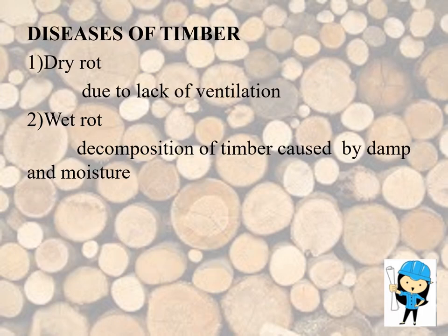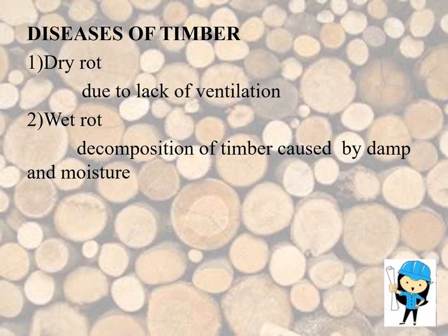Next we are going to see about the diseases of timber. There are two types: dry rot and wet rot. Dry rot is a disease caused due to lack of ventilation. This situation promotes fungal growth, which eats the fibers of the timber and reduces them to dry powder. Wet rot is the decomposition of timber caused by dampness and moisture, further induced by alternate wet and dry conditions.